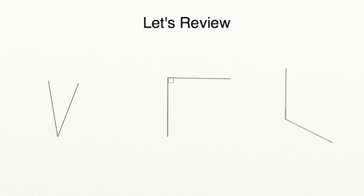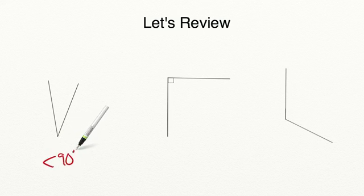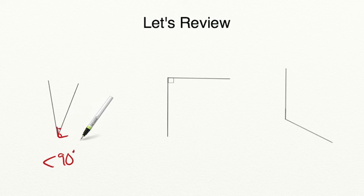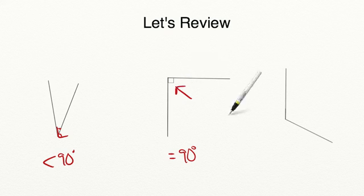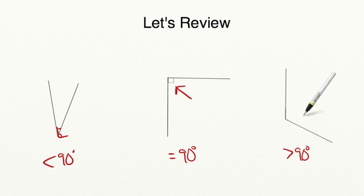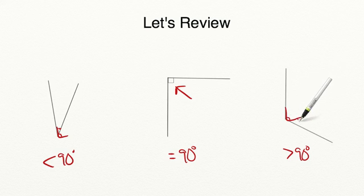Let's review what you've learned in today's lesson. An acute angle is an angle that is less than 90 degrees, and you can tell by drawing a right angle in the corner — if the angle is less than the right angle, then it's an acute angle. A right angle is exactly 90 degrees and will be displayed with a square in the corner. An obtuse angle is an angle that is greater than 90 degrees, and you can check by drawing a 90 degree angle in the corner — if it's greater than 90 degrees, then you know it's an obtuse angle.